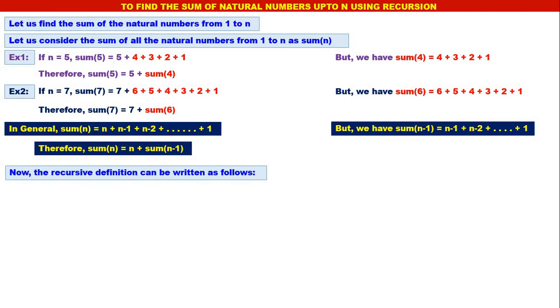The recursive definition can be written as follows: sum of n — if n is 1, it is 1 only; otherwise, it is n plus sum of n minus 1. This is the recursive definition.